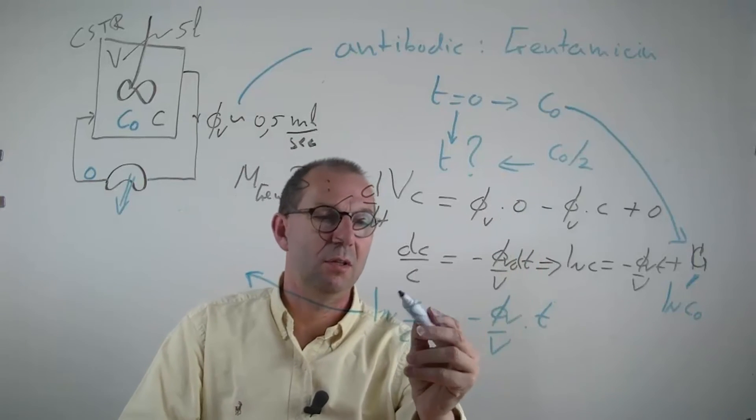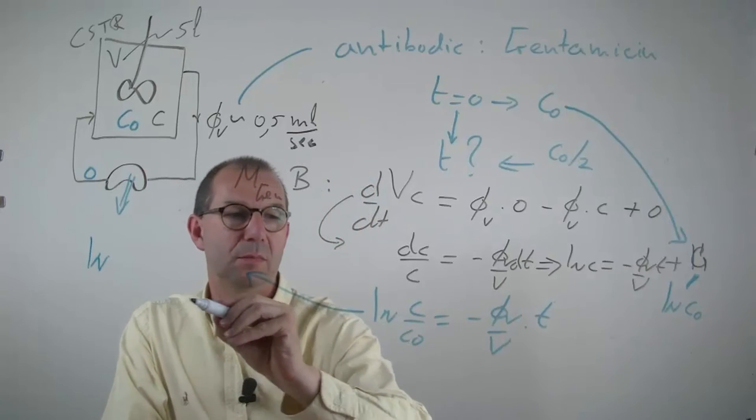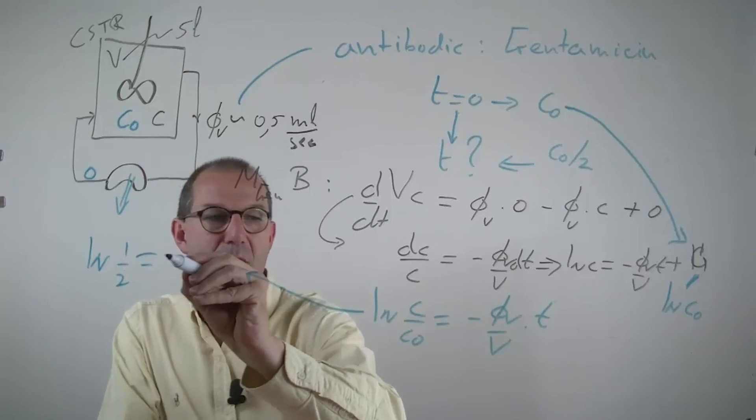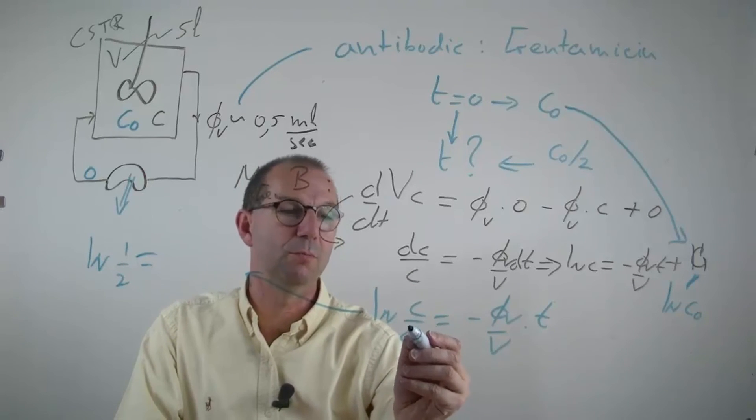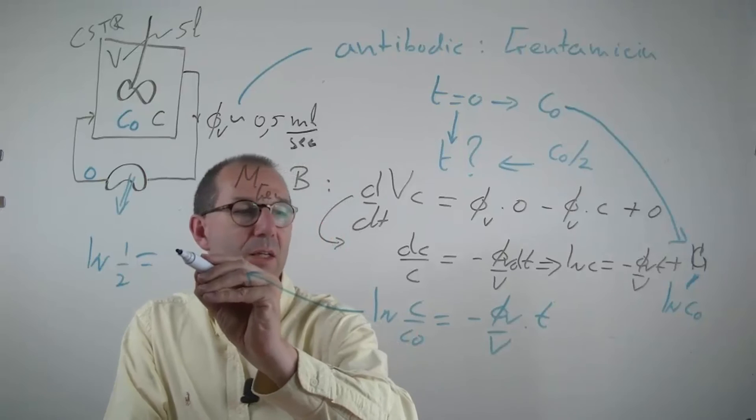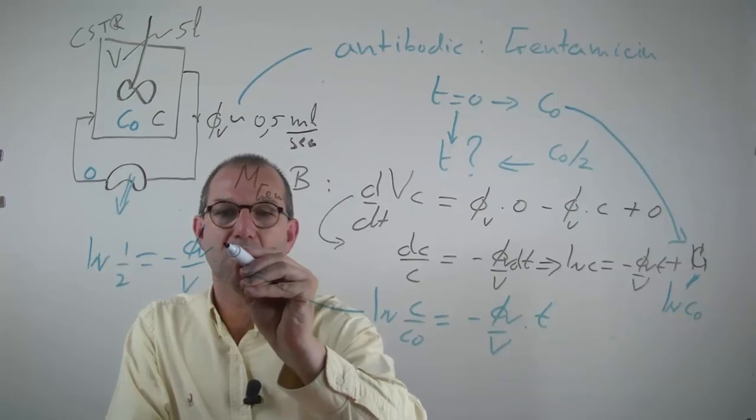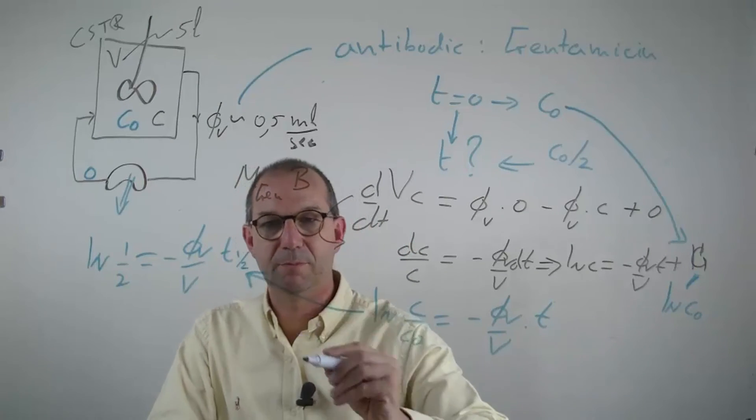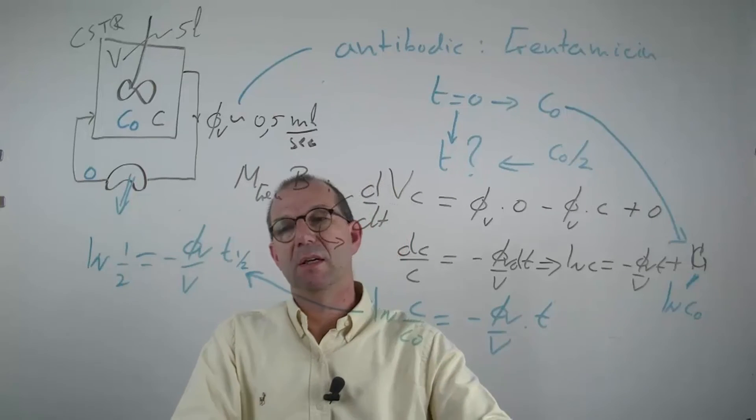If the concentration only half is left, then the logarithm of half, that is this side, that C is C₀ over 2, and that C₀ drops out, equals minus V̇/V times the time that we're looking for, T_half if you want, subscript half, not multiplication.